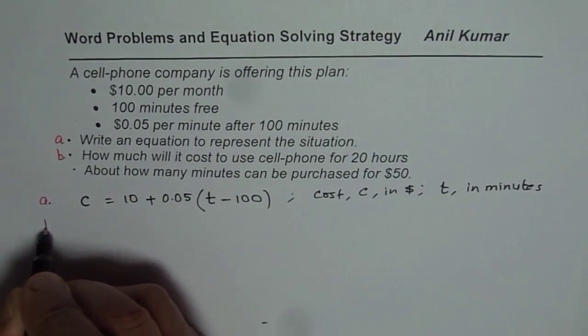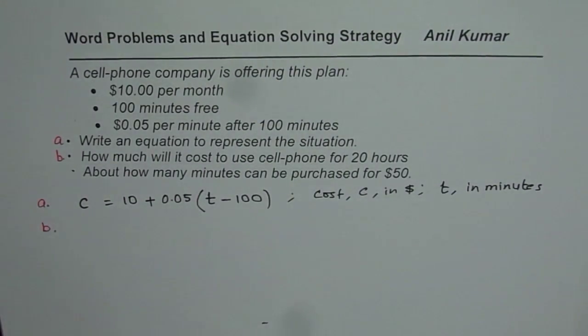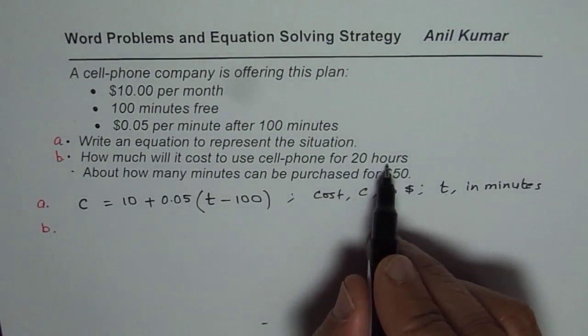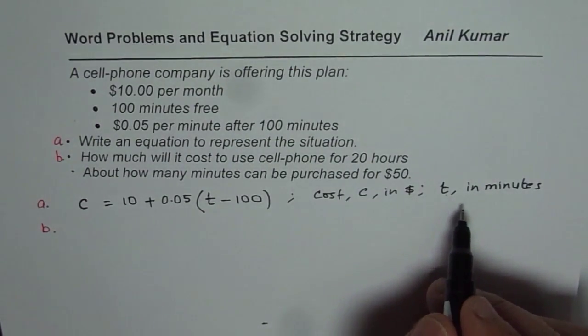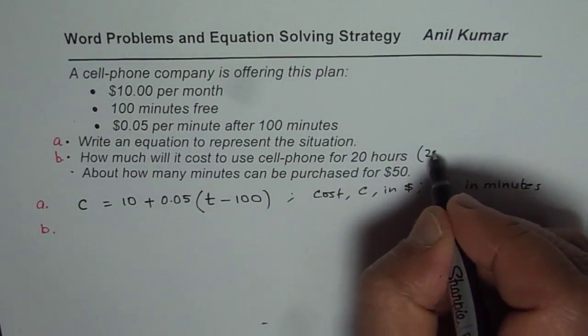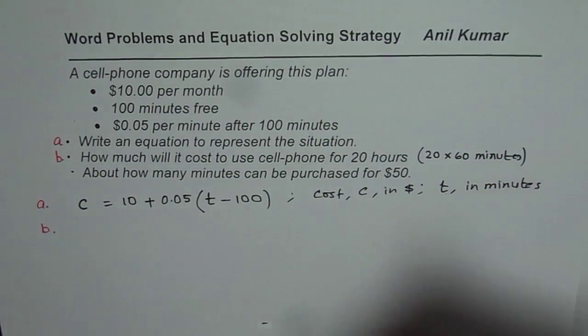We will do part B now. Part B is how much will it cost to use cell phone for 20 hours? Now this time T is in minutes, so first step is convert 20 hours to minutes, that is multiply by 60. So we will write this as 20 times 60 minutes.